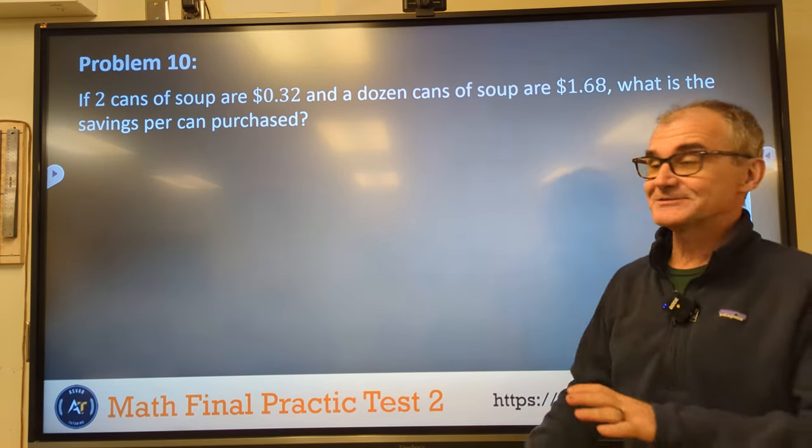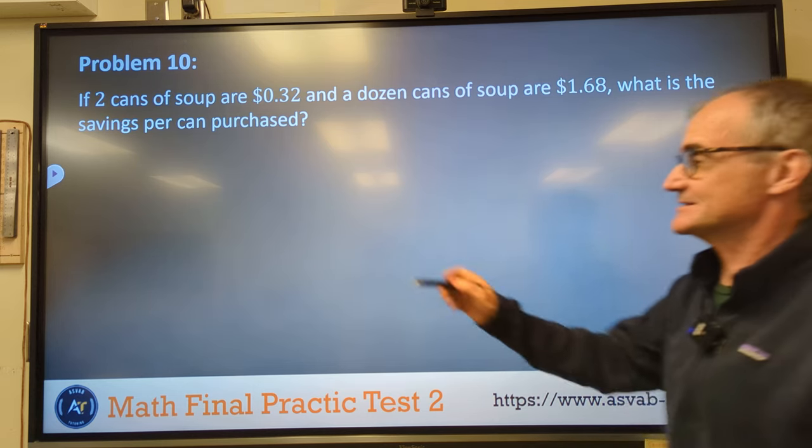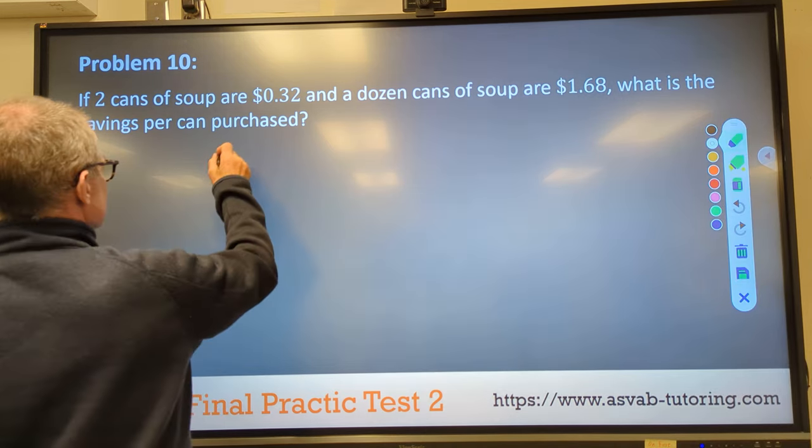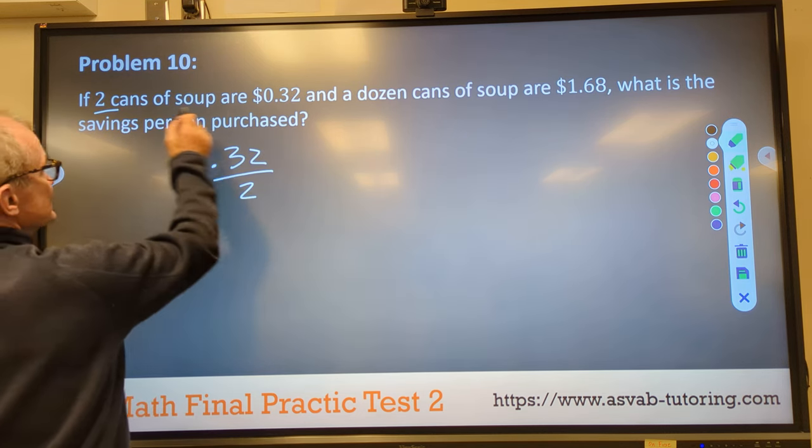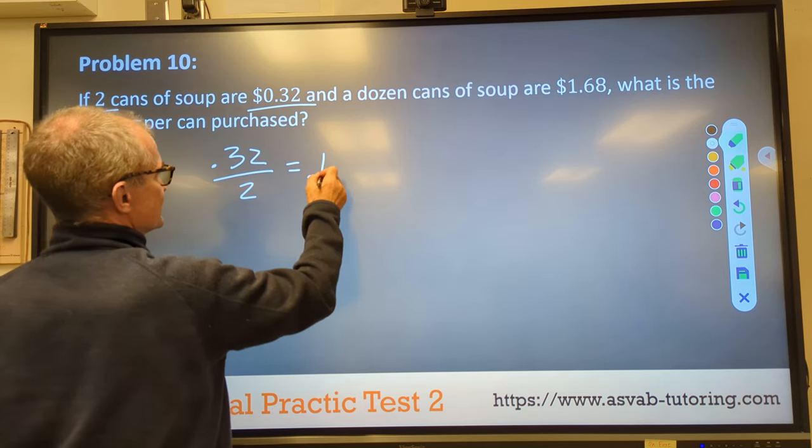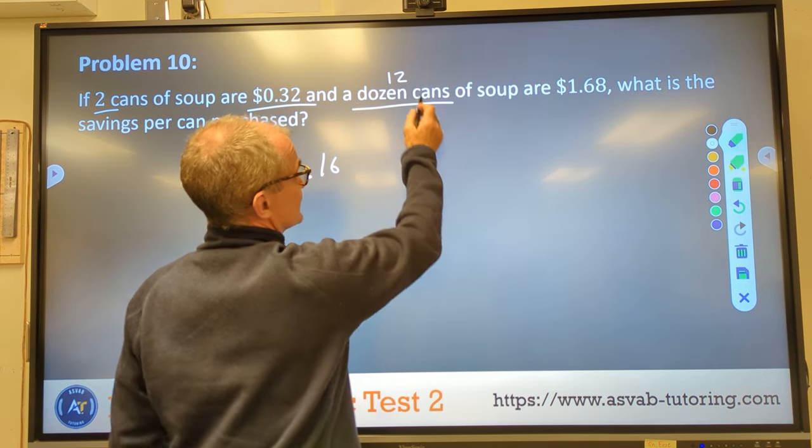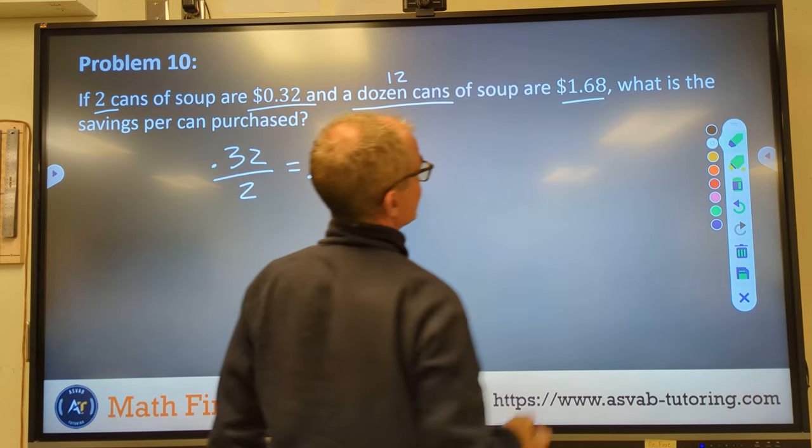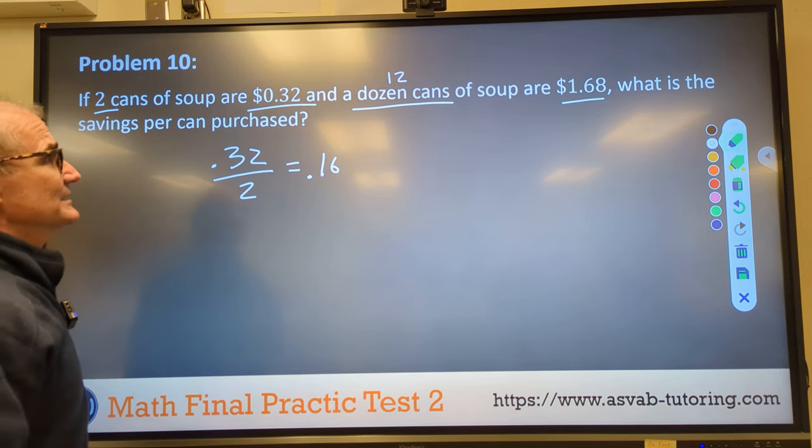Problem number 10, staying strong. Let's keep going. If two cans of soup are 32 cents. So two cans are 32 cents. So of these two cans, they are 32 divided by 2. They are 16 each. And a dozen cans, 12 cans, are $1.68. That's a deal.